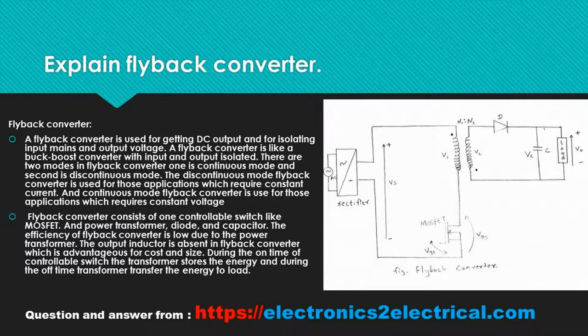Explain flyback converter. A flyback converter is used for getting DC output and for isolating input mains and output voltage.